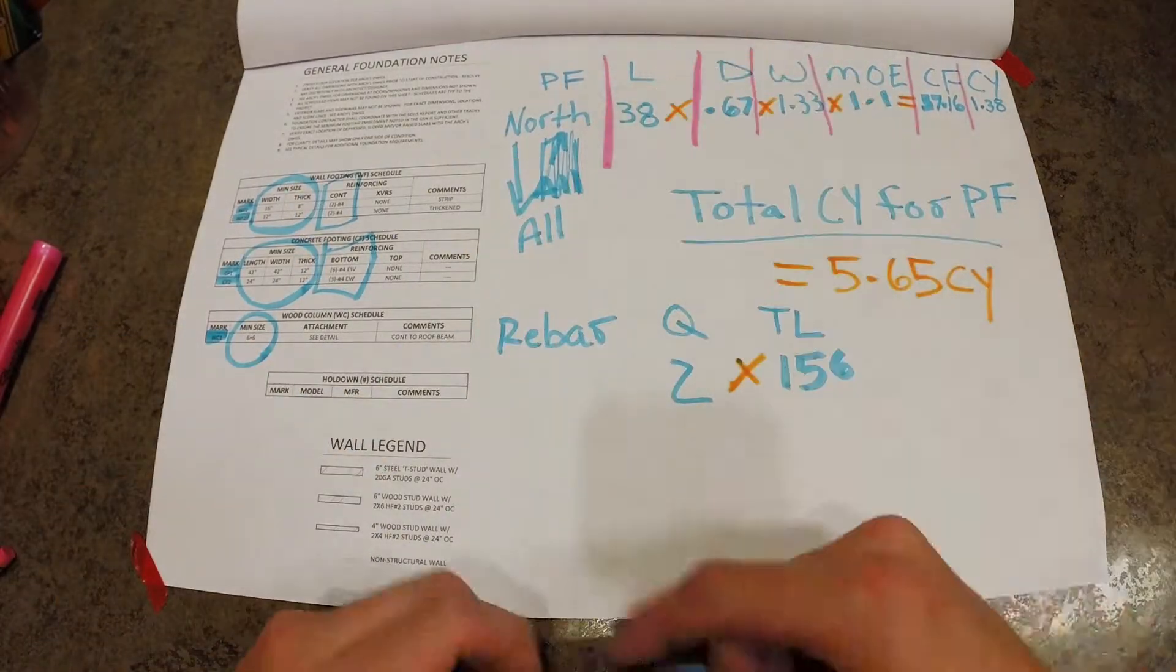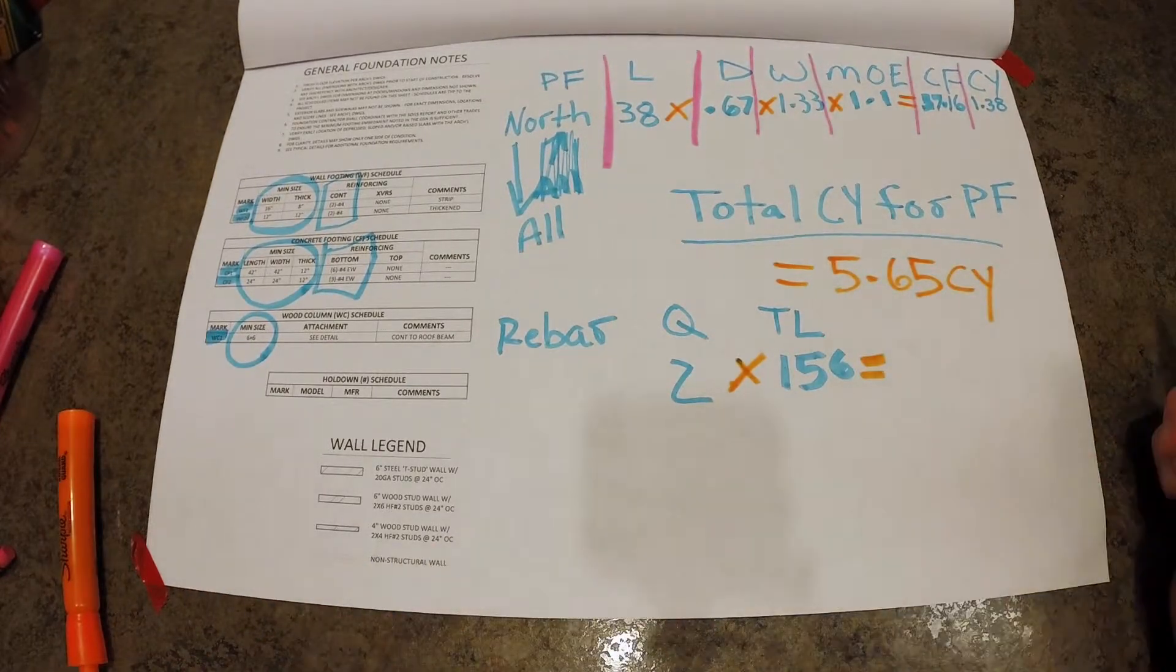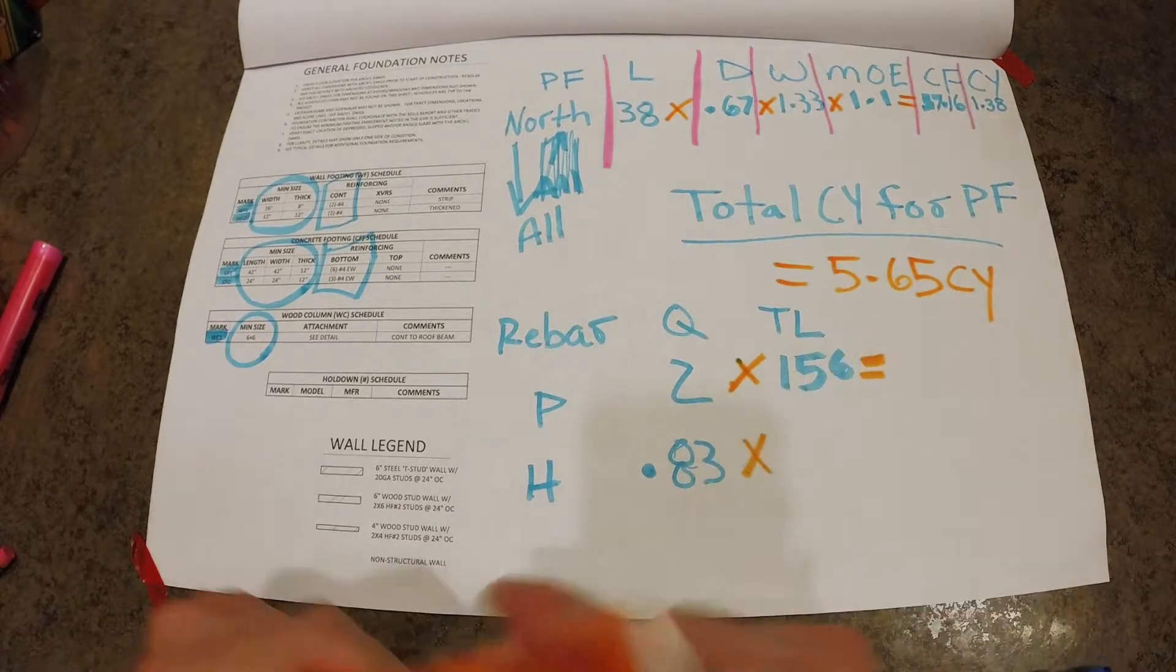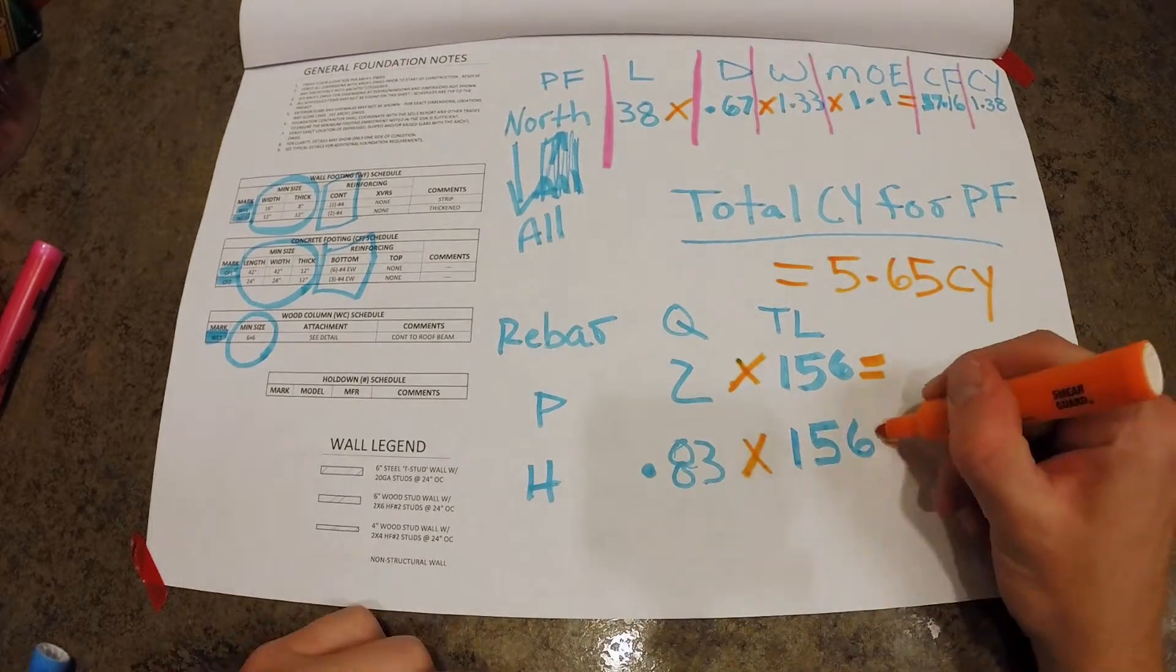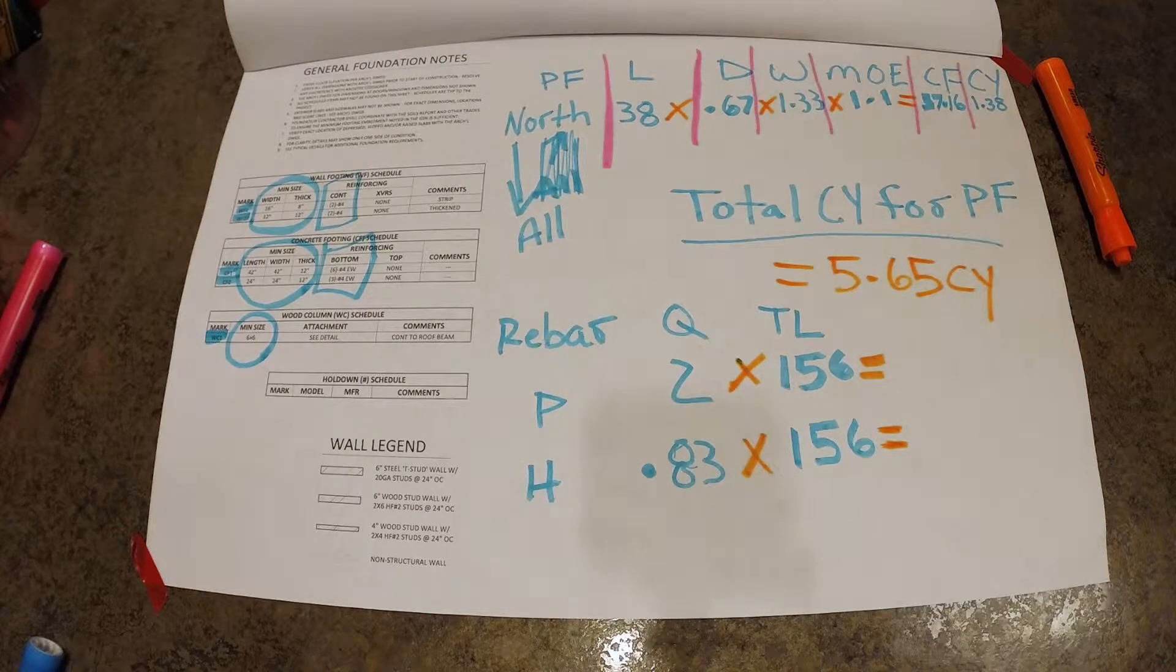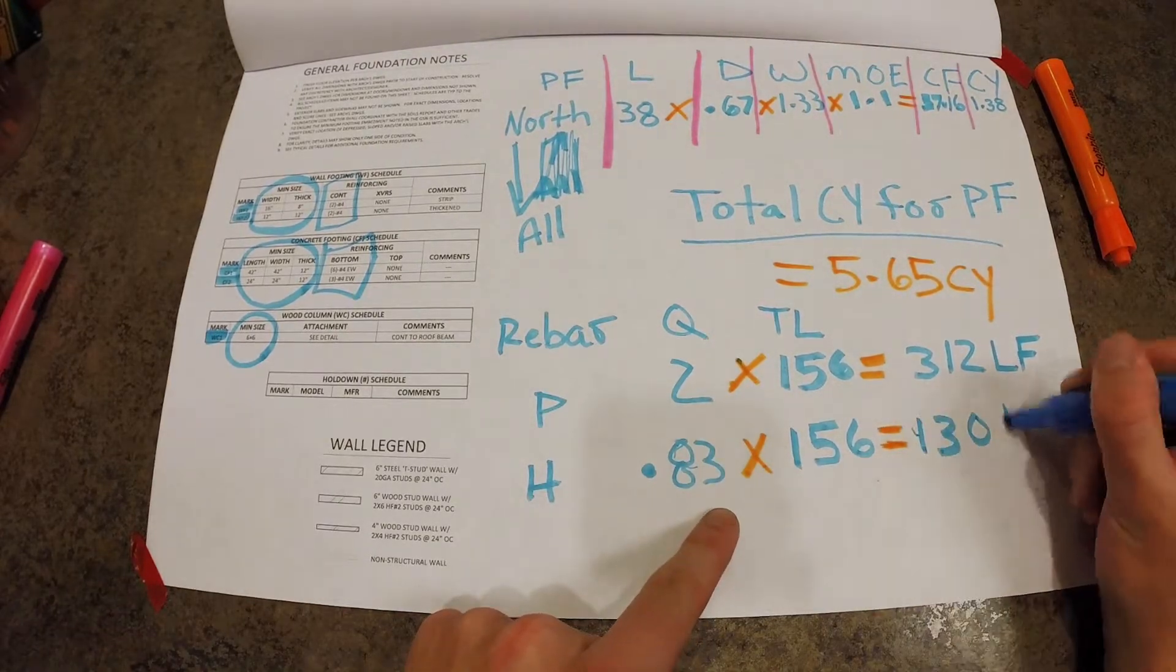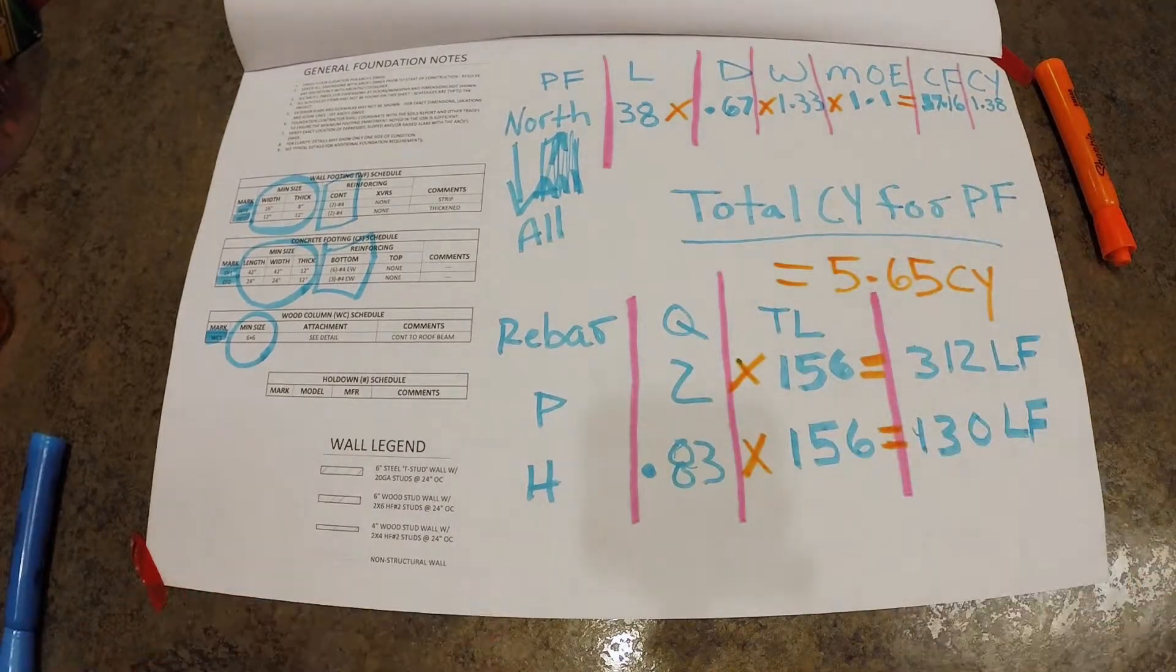We also have some horizontal members that we'll add to this in a minute. But for now we know that just around that perimeter, it's going to be 2 times 156. And then we've got 0.83 feet per foot based on the call out, again at 156 feet. So with these two lengths, we've got 312 plus 130 linear feet. So that's how much rebar we need just for that one section.